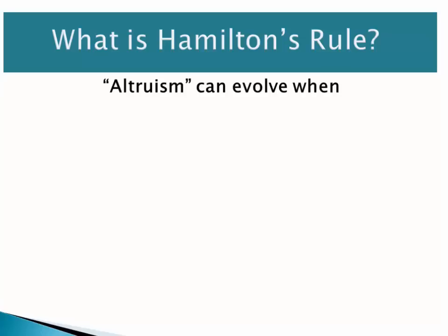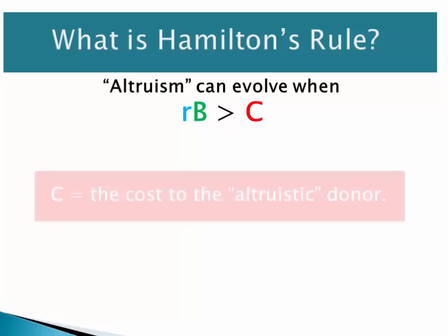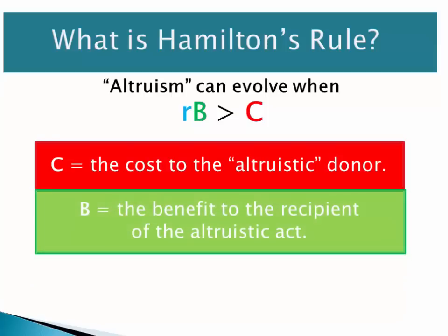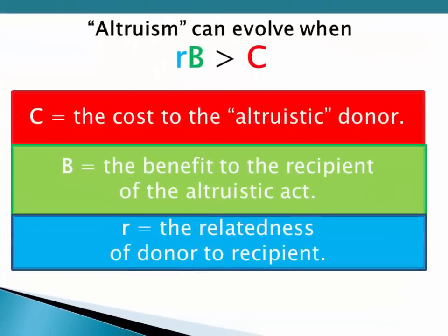Hamilton's Rule argues that altruism can evolve when R times B is greater than C. The benefit of that altruistic act has to be greater than its cost — and that cost is specifically the cost to the altruistic donor. The benefit is the benefit to the recipient, and R, which is critical to the rule, is the relatedness between the donor and the recipient. If relatedness is high enough relative to the cost and benefits, it can change them.